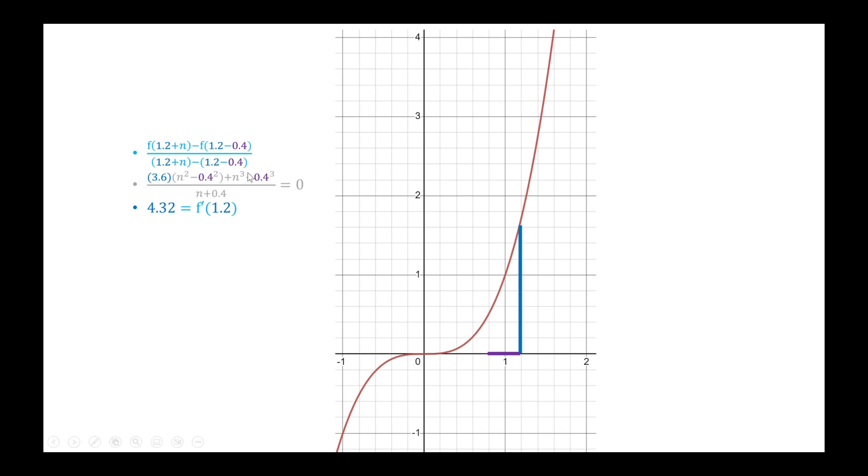So all we need to do is solve this equation for n. Since this solution procedure is quite involved, I'm just going to feed this to a calculator, which tells me that n is 0.359592 and so on, which in my diagram is represented by this grey line over here. Now if I plug this n in to this difference quotient over here, I should get exactly the same value, because this is just the slope of the parallel secant line. And indeed, it is the same.